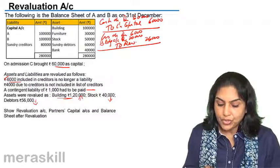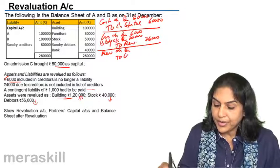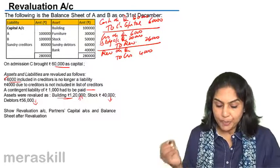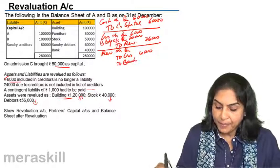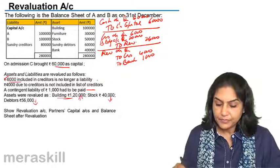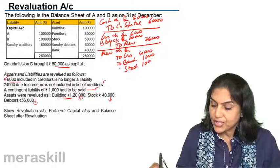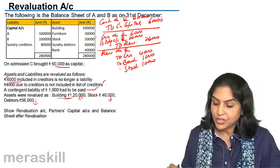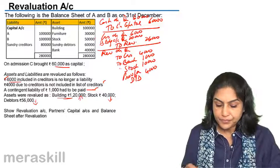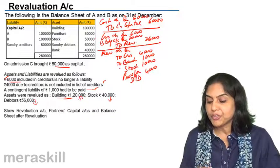4,000 due to creditors not included — revaluation account debit to creditors, amount is 4,000. Contingent liability had to be paid, so revaluation account debit to bank. Stock value has come down by 10,000 — it was 50,000, it's become 40,000. And to provision for doubtful debts, an amount of 4,000. We are creating a provision — it is revalued. Assume it's not been written off, only a provision has been created.